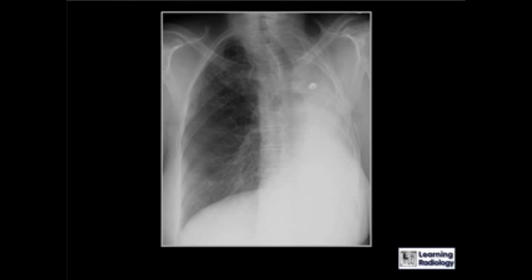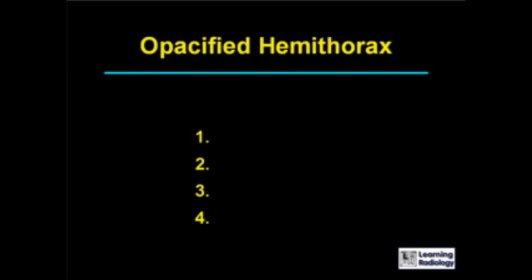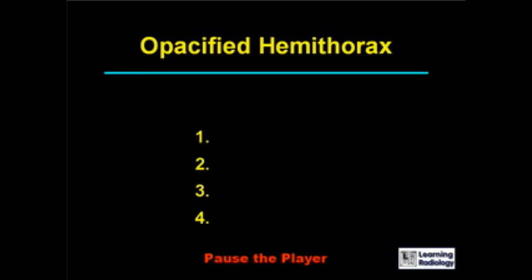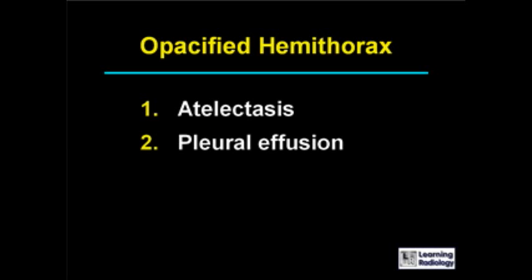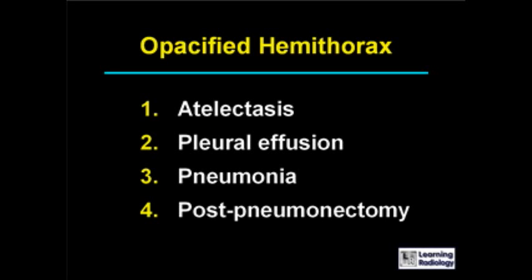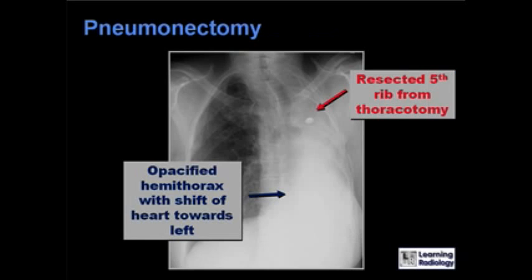The next differential is for an opacified hemithorax. There are four causes: atelectasis, pleural effusion, pneumonia, and post-pneumonectomy.